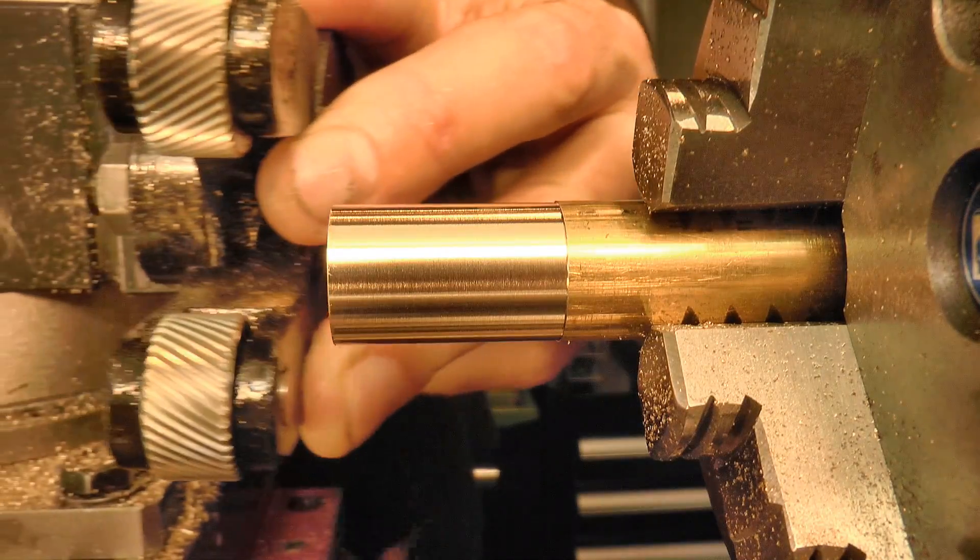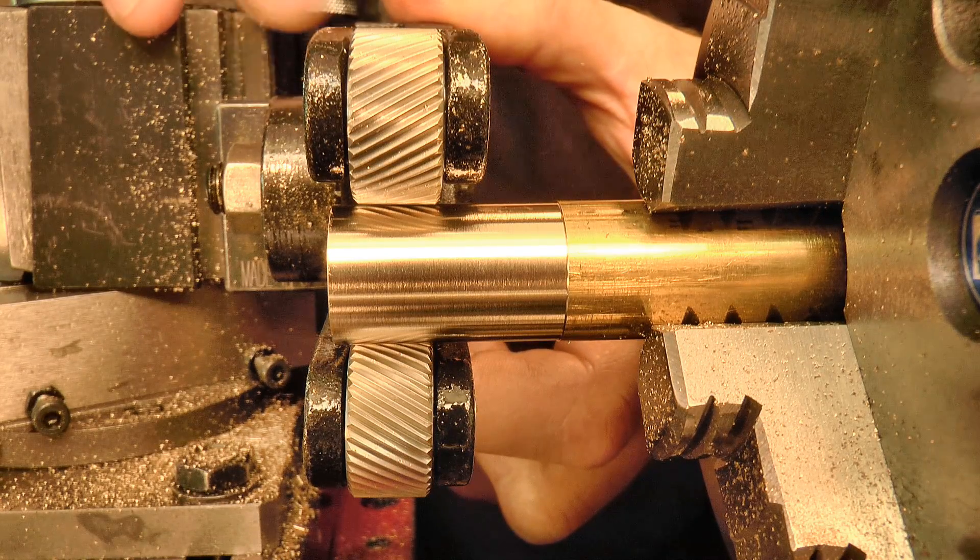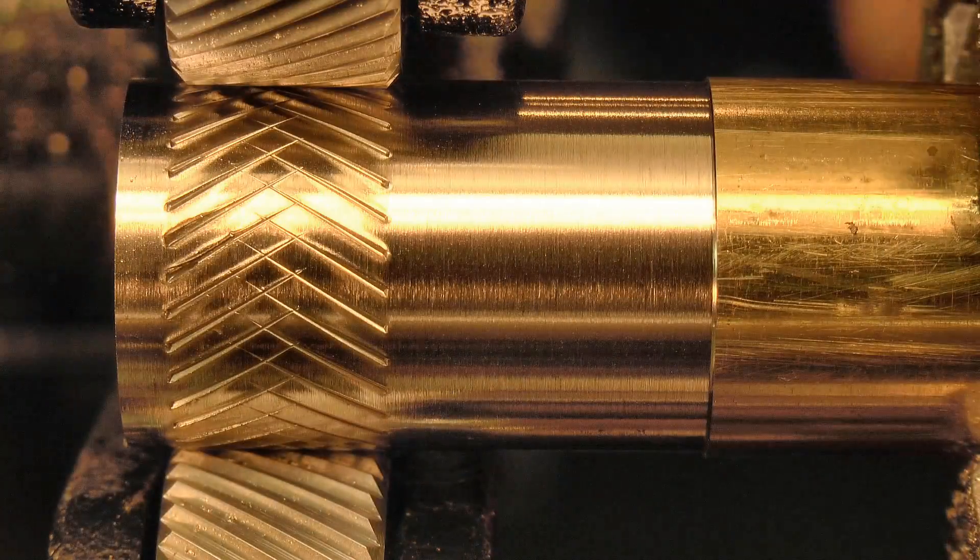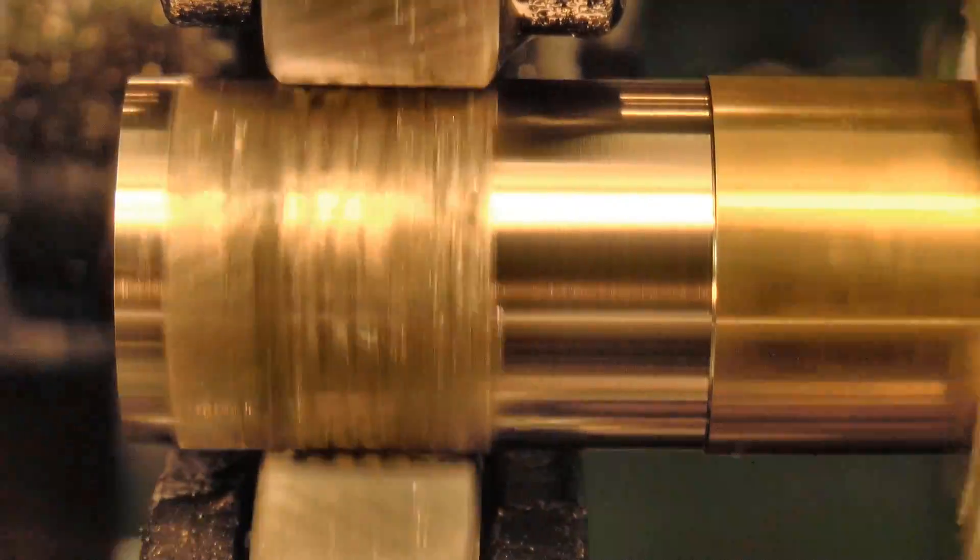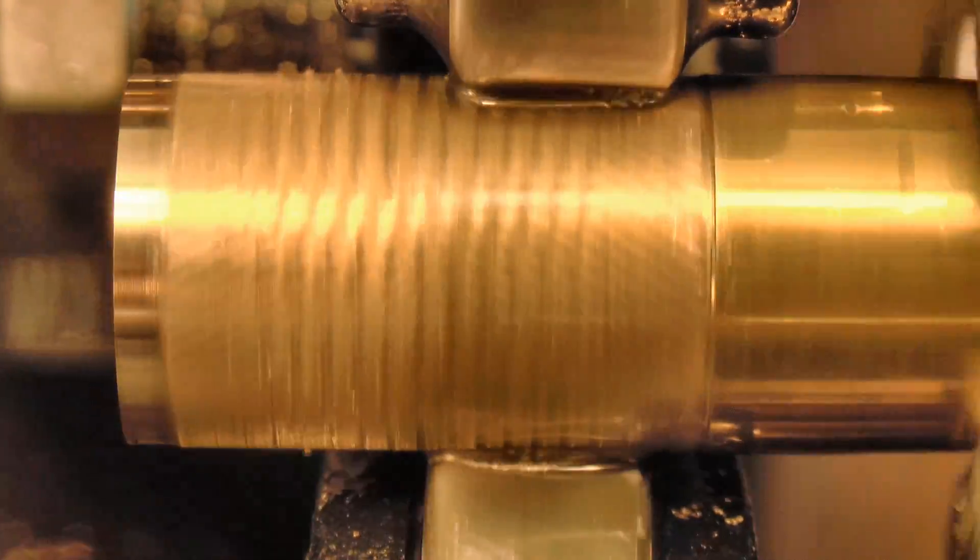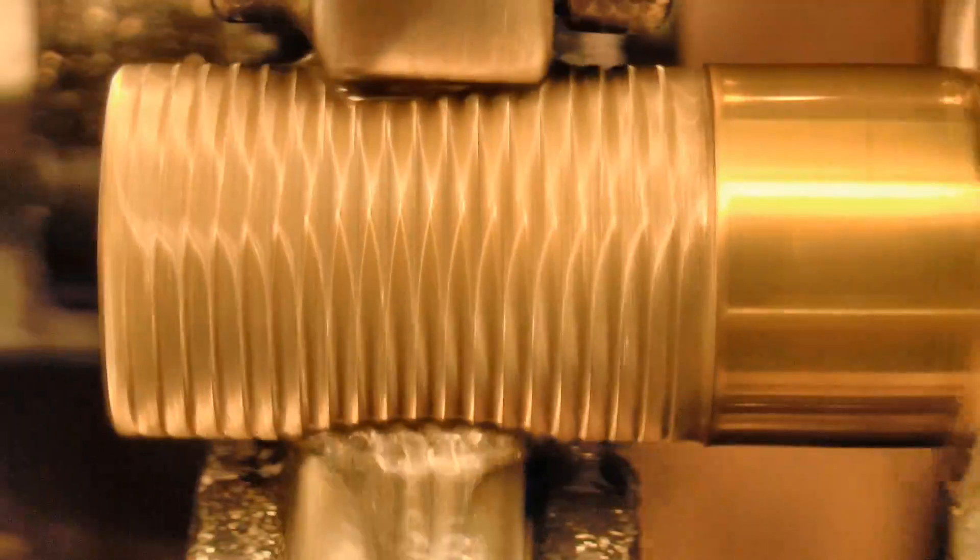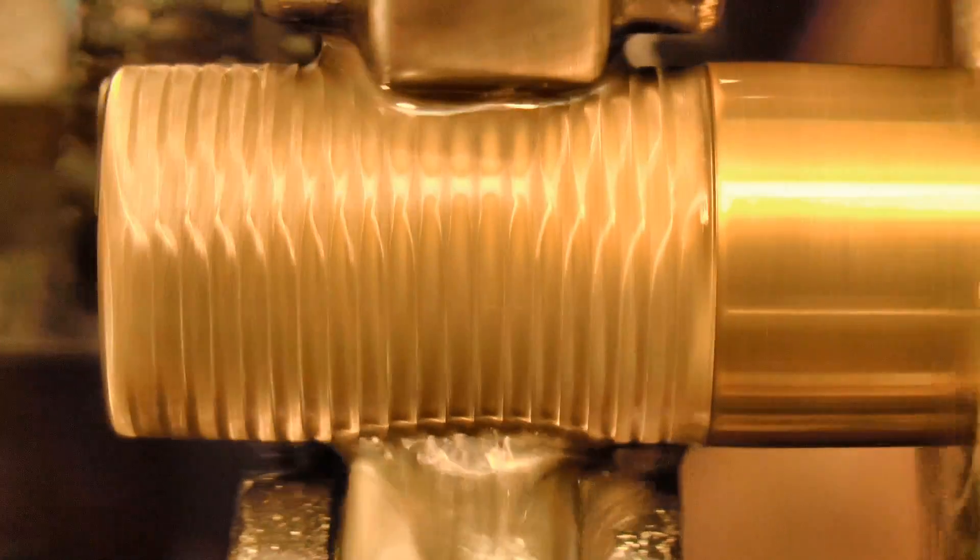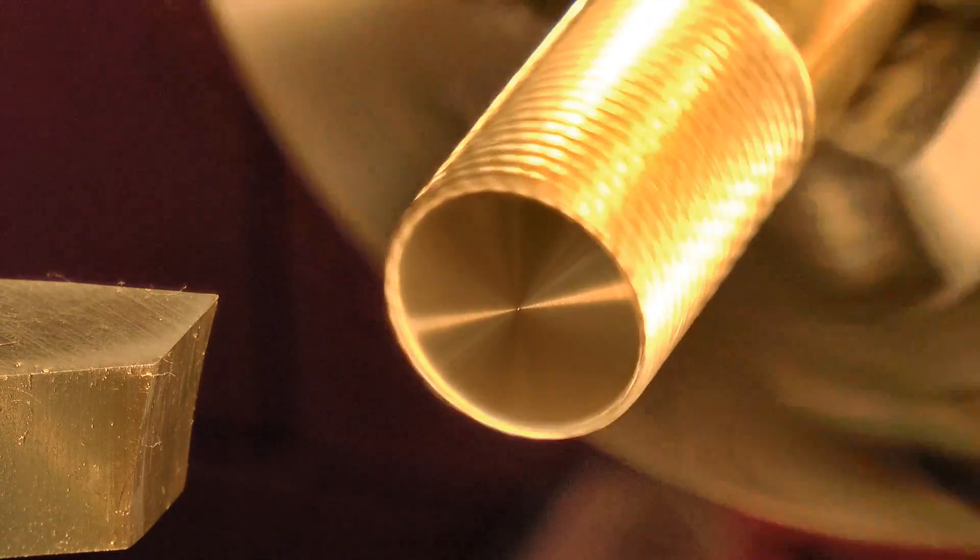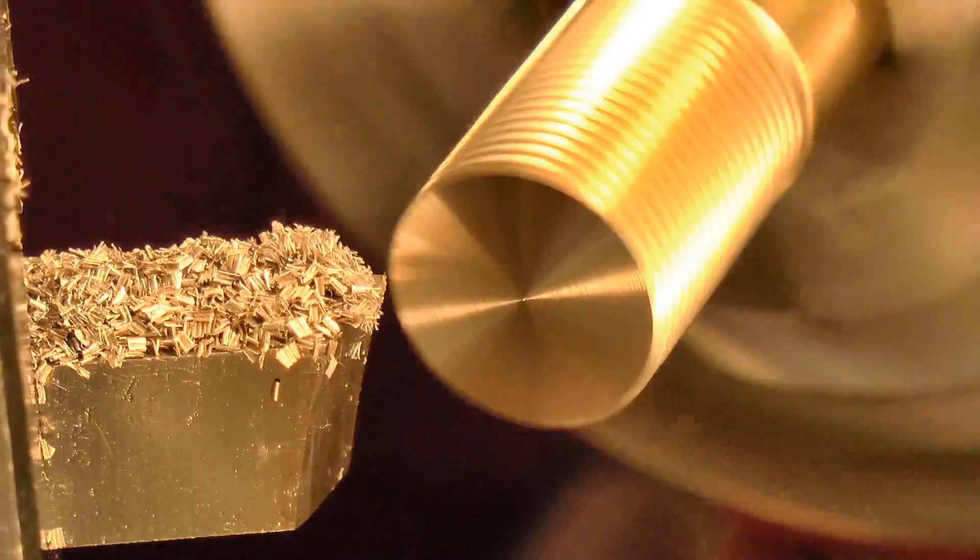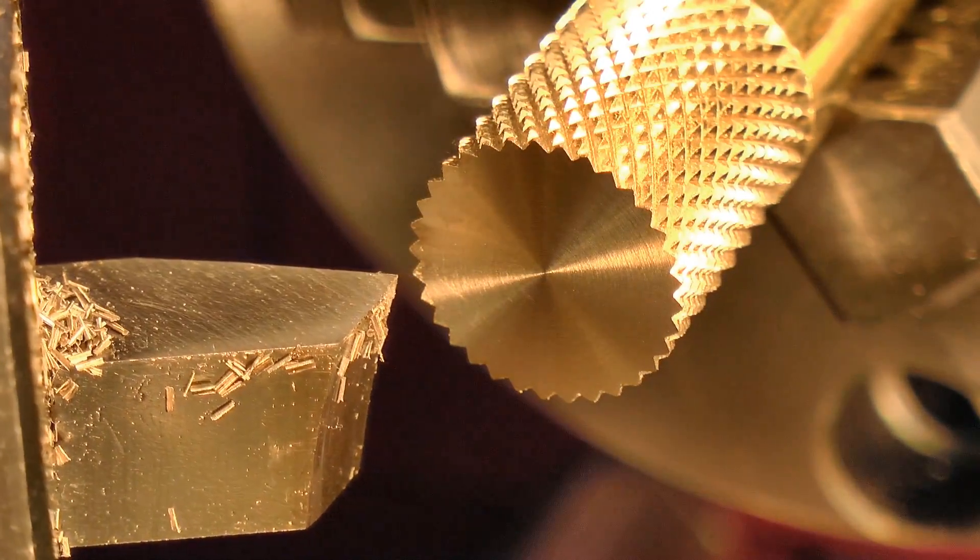Then the knurl pattern is lightly established, and finally the full pattern is cut under power with plenty of fluid. Again, I found a nice intersection point with the knurl pattern, and then cut to depth.